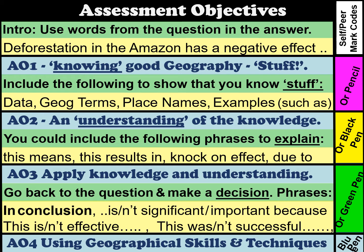AO1 is including good knowledge — good geography stuff like data, geography words, place names, and examples. AO2 is understanding the knowledge: can you explain it using phrases like 'this means that,' 'this results in,' 'not going to affect,' 'if this is due to,' 'because.' AO3 means making decisions and showing understanding using phrases like significant, important, effective, successful — that shows you've made a decision.